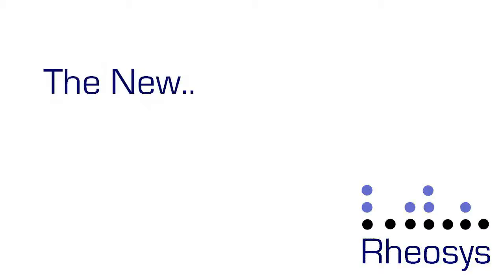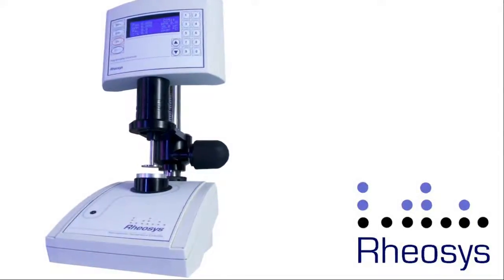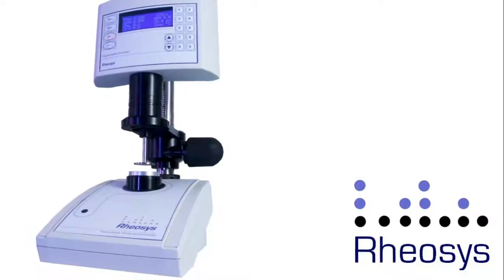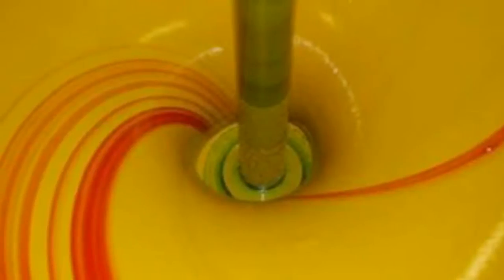The new Merlin 2 from Rheosys, a high-performance fully self-contained rotational viscometer with integrated temperature control. Routine viscosity measurements of materials are important in most industrial processes such as mixing, pumping, spraying, and coating.